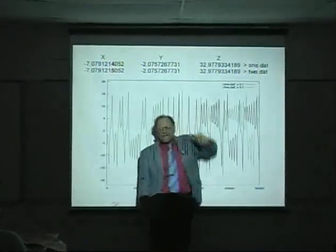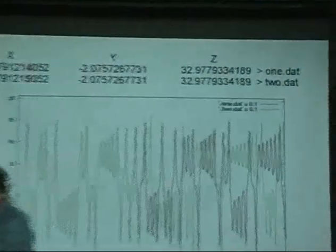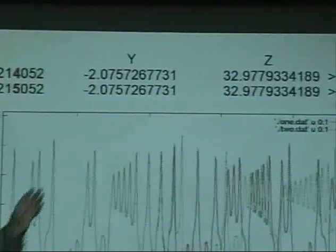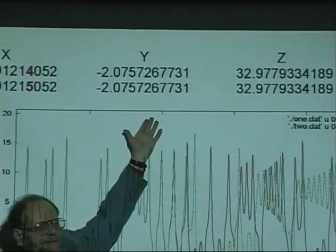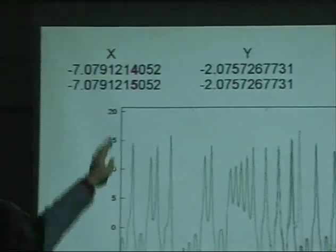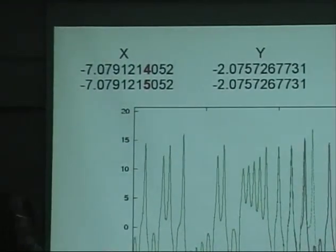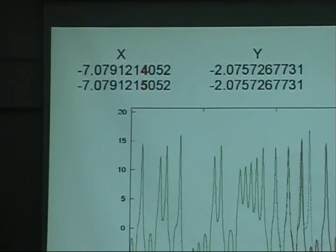They have the same Z coordinate to 15 decimal places, the same Y coordinate to the same 15 decimal places, and the same X coordinate up to 7 decimal places. They differ in the 7th decimal place.